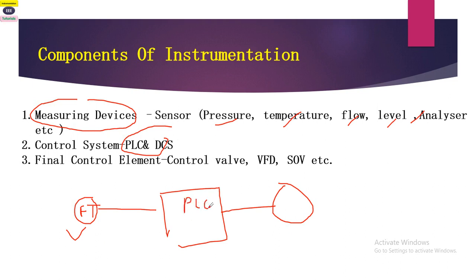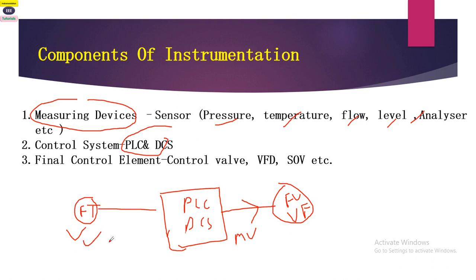The control system — PLC or DCS — is where all the logics are configured. According to the set point and logic configurations made inside the PLC or DCS, it will actuate the output value which controls the final control element, which may be a valve, BFD, or SOV. These are the components of instrumentation: measuring device, control system, and final control element.